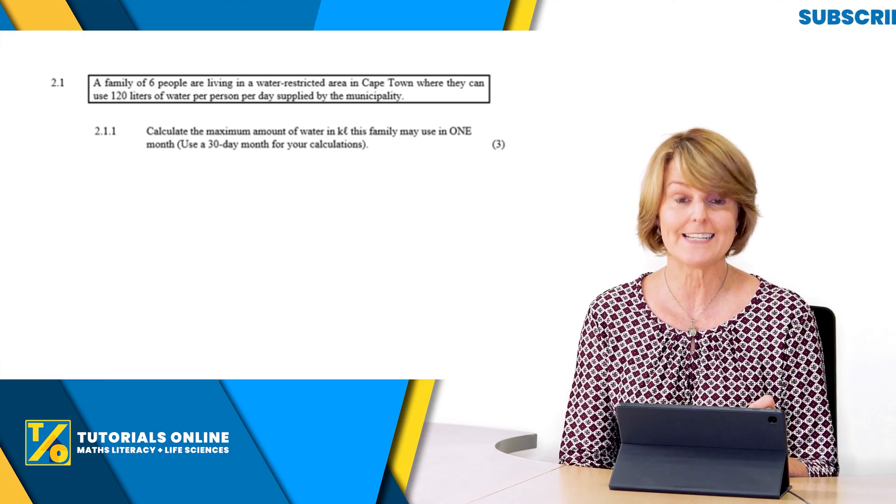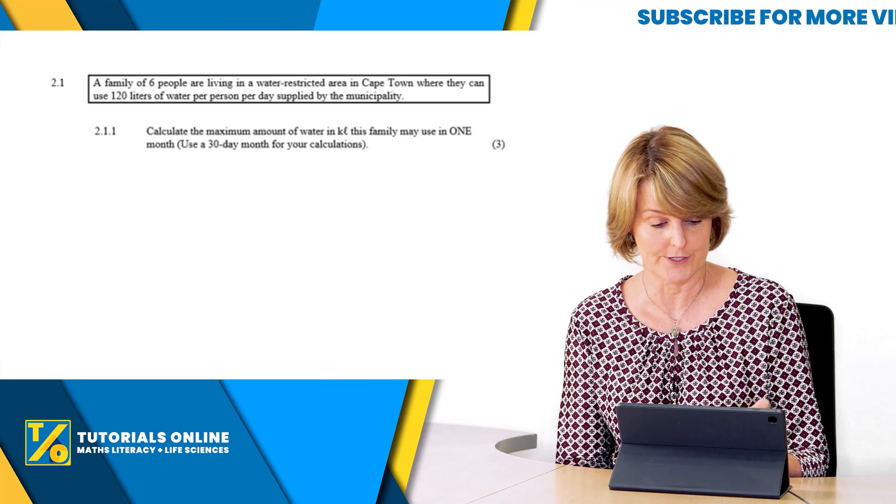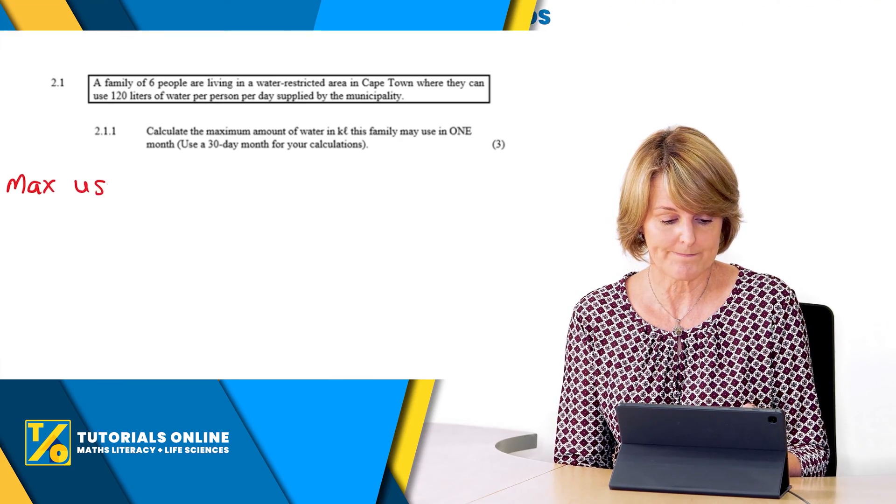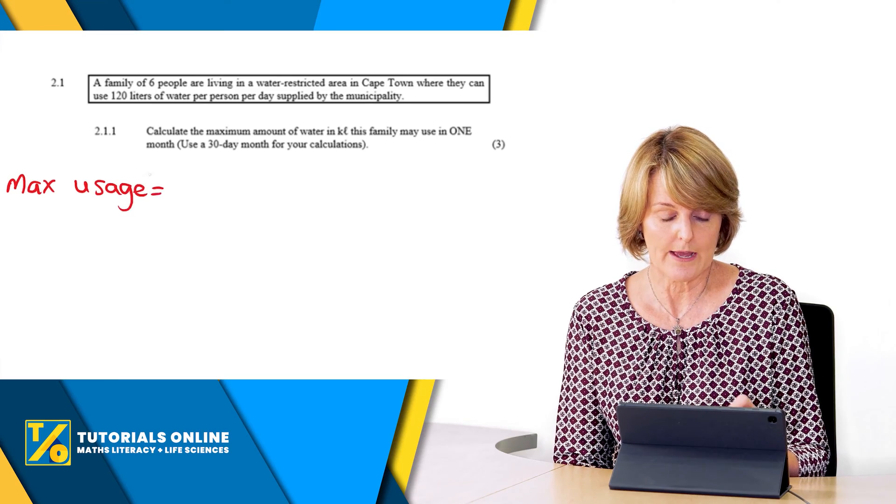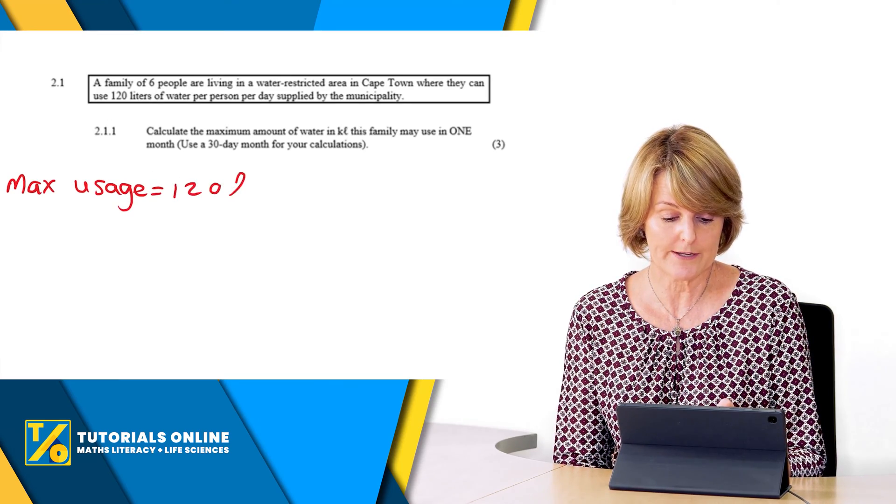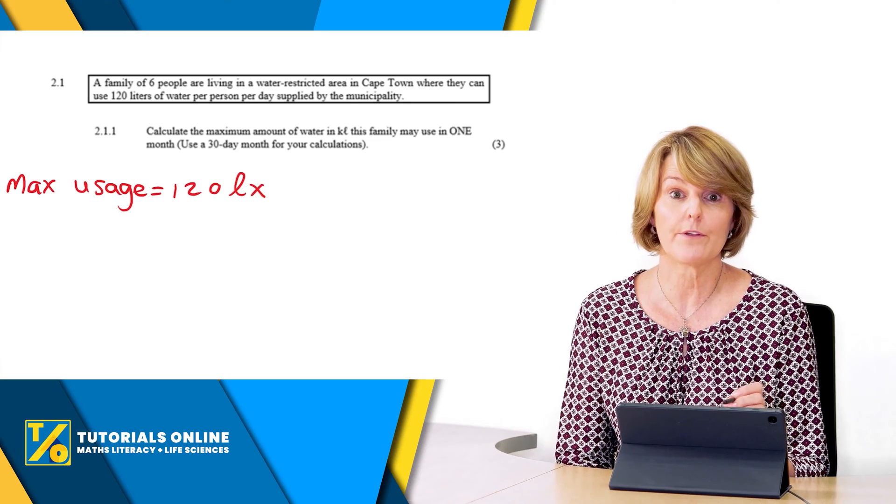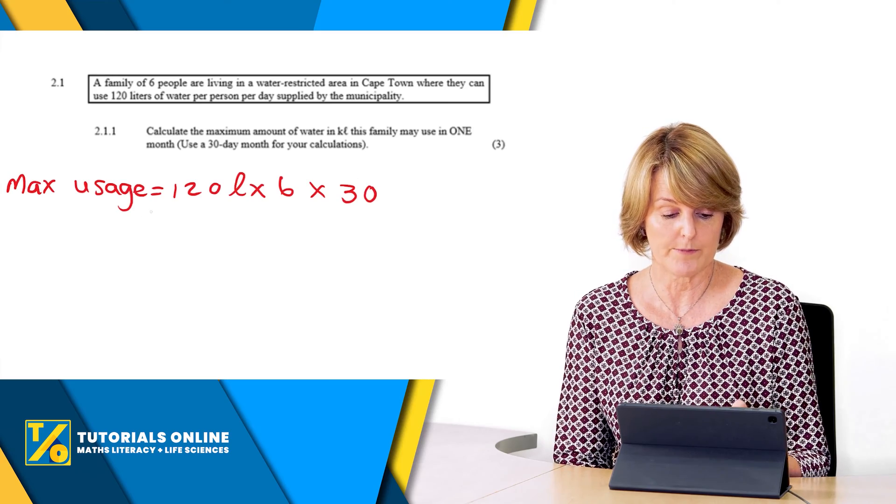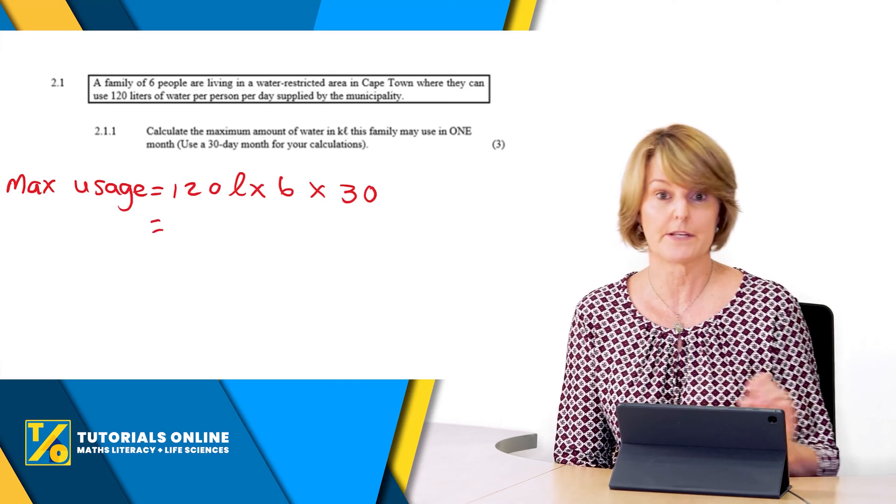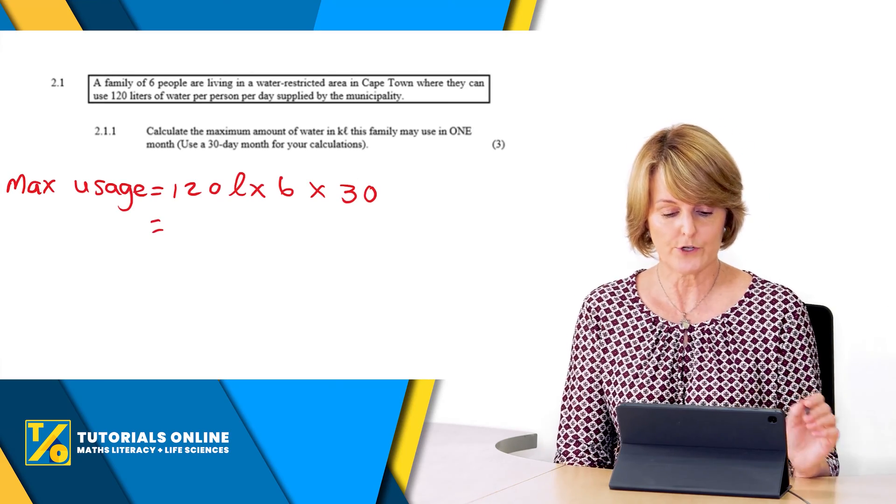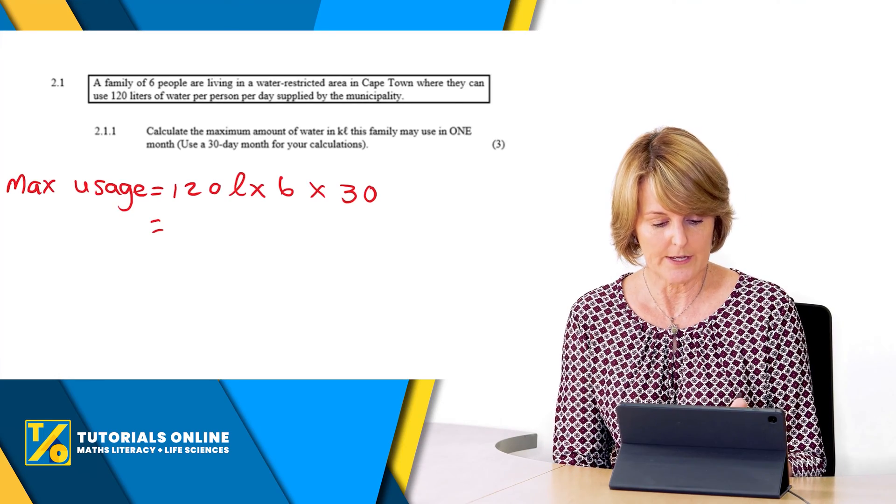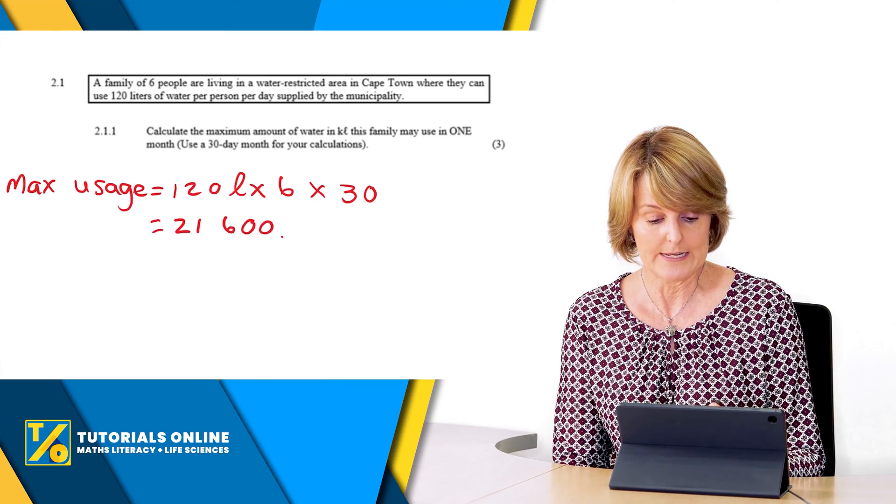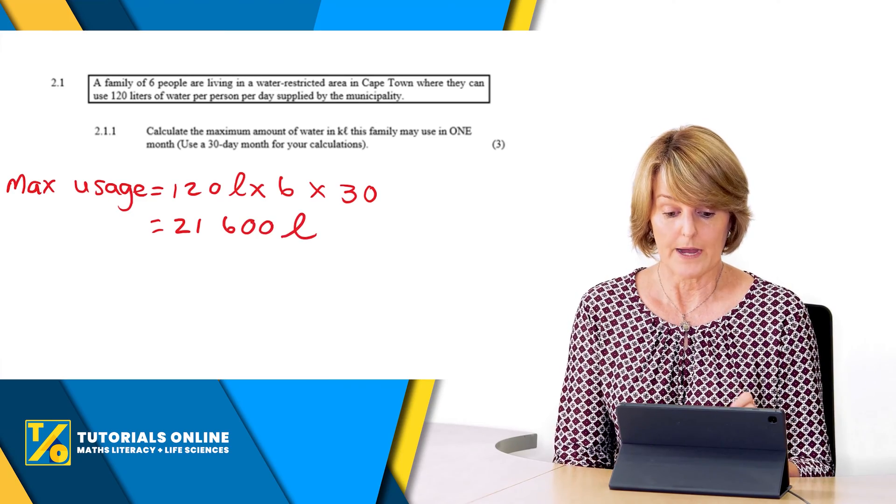It says calculate the maximum amount of water in kilolitres for this family may use in one month. They tell you to use a 30 day month for your calculations. So maximum usage equals they're allowed 120 litres per day times how many people are there, six, and how many days, 30 days. You must remember to include all three aspects in your answer.